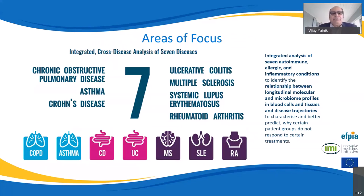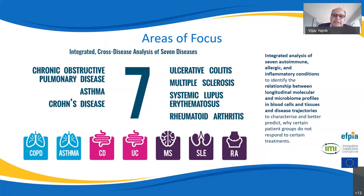In 3TR, we are looking at seven disease areas: COPD, asthma, Crohn's disease, ulcerative colitis, multiple sclerosis, SLE/lupus, and rheumatoid arthritis. We are trying to understand, using integration of multi-omics, whether we can come up with novel biomarkers and truly understand treatment non-response. In IBD, we have both Crohn's and ulcerative colitis, and that program is led by Stephan Treiber and myself. I'm also the overall microbiome lead across all these disease areas.